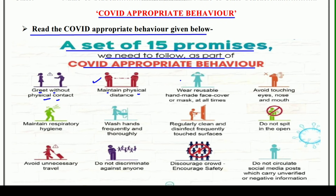Next is: wear reusable handmade face cover or mask at all times. Yani aapko apna face cover karne ke liye handmade reusable mask pahenna zaroori hai. Reusable — jis ko aap baar baar dho sako — kyunki aap kitne khareed hoge? Kharidne ki toh koi limit hi nahi hai. Toh reusable handmade face cover ya mask honga, toh us se hum COVID se bache rehenge. Aur yeh hume sabhi times lagana hai — at all times.